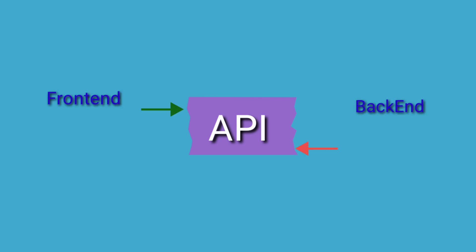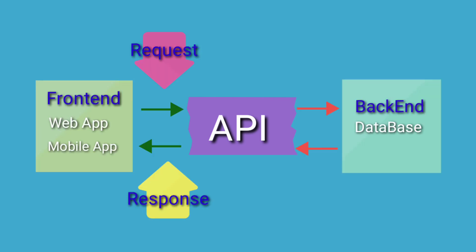APIs are basically an interface which stands between front-end and back-end. Nowadays, most applications have their business logic written within their APIs. API development follows universal standards and is not application-specific, which means you can call an API from your web application or from your mobile app to display the response result.